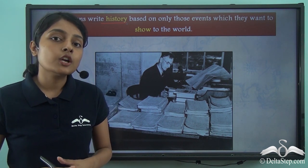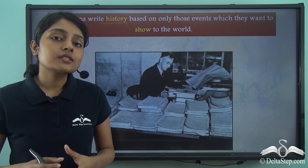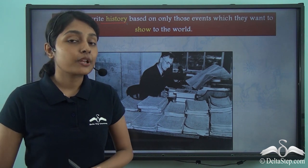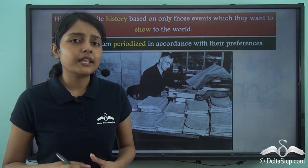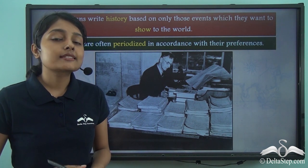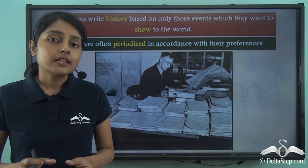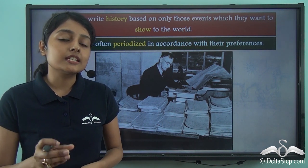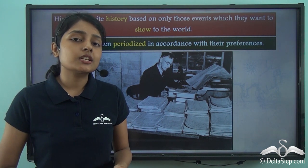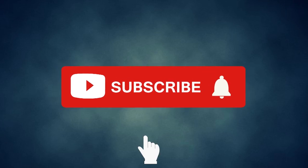Firstly, it is the historian who gets to ascertain which dates are of importance to him or her. And then it is the historian who also gets to construct history based on his or her perspective and preferences. The historians play a major role in the construction of history. Historians also get to periodize or categorize history in accordance with their preferences — along with marking important dates, they also break various events and phases into separate categories. This categorization and periodization of history and its relevance is something we will focus on in our subsequent lesson.